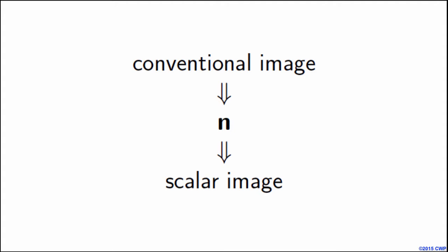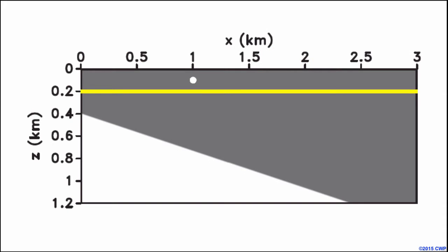In summary, we generally need to do migration twice. The first time is to compute the vector N. In practice, the accuracy of the estimated N relies on the quality of the image obtained from the conventional imaging condition. When computing the scalar PS image, we need to estimate the N that gives us the right direction for the reflectors that would appear in the scalar images.